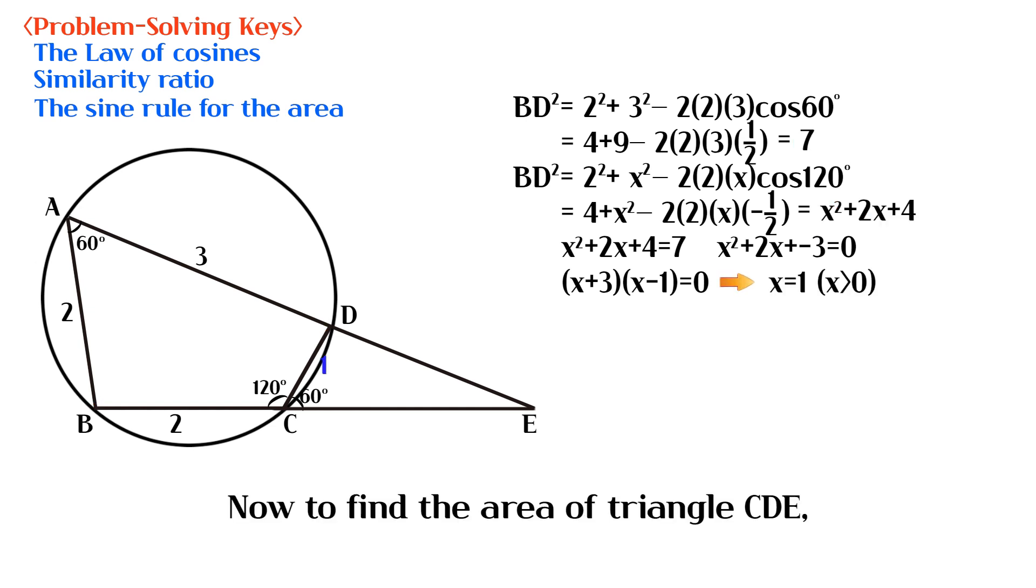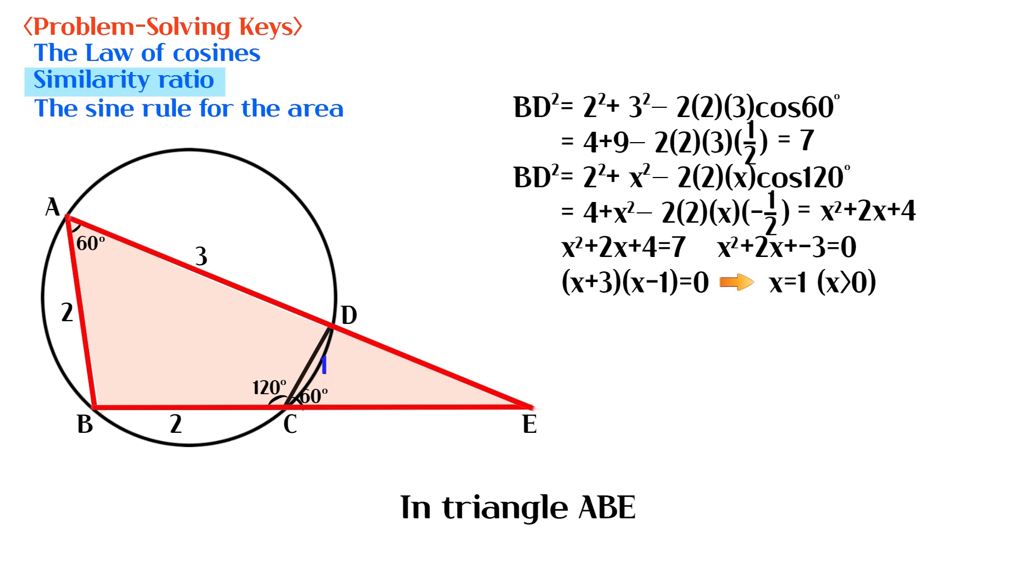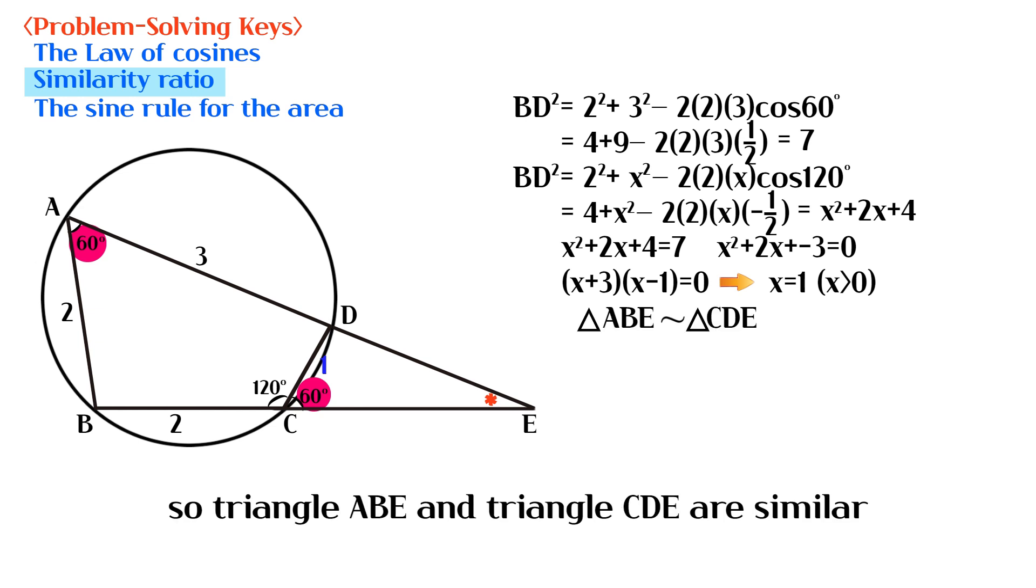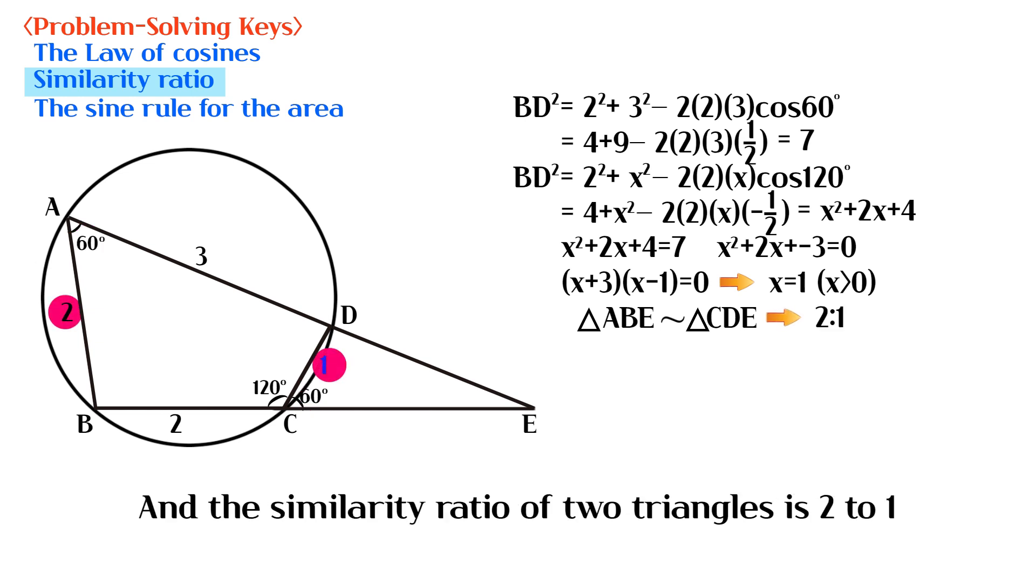Now to find the area of triangle CDE, we need to find the length of CE. In triangle ABE and triangle CDE, angle BAE and angle DCE are the same, and angle AEB is a shared angle. So triangle ABE and triangle CDE are similar, and the similarity ratio of two triangles is 2 to 1.